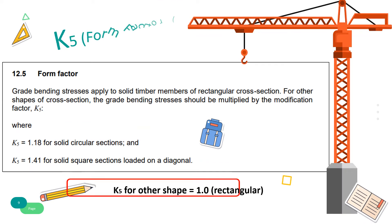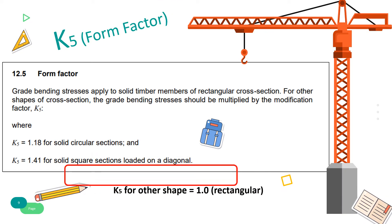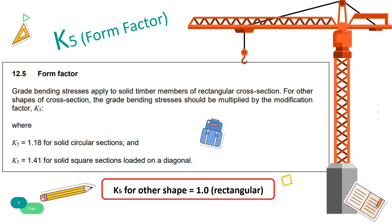Refer to Clause 12.5 for modification factor K5 for form factor. In this question, K5 only has values for solid circular and solid square sections. Therefore, for a rectangular section, the modification factor is 1.